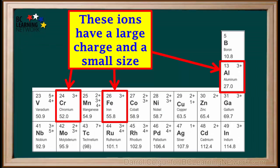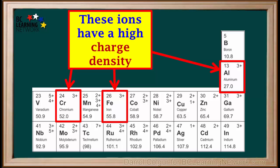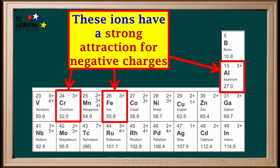So these three ions, which are near the center of the periodic table, have a large charge and a small size. Because they have a large charge concentrated into a small size, they have what is called a high charge density. This gives them a strong attraction for any negative charges that happen to be nearby.